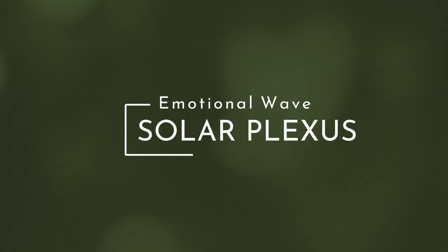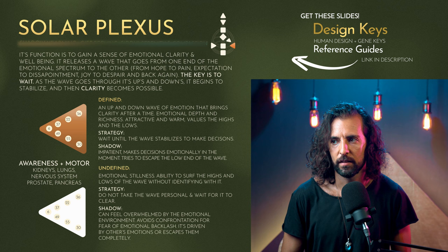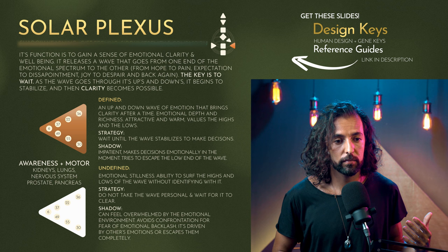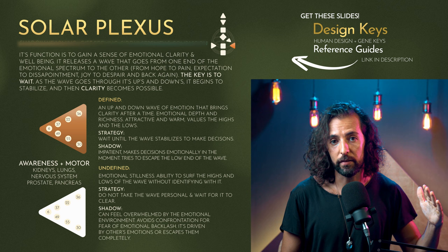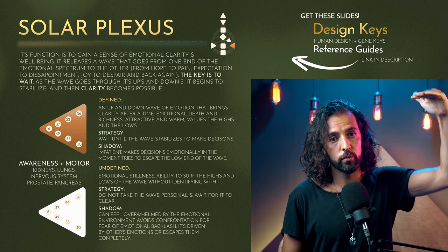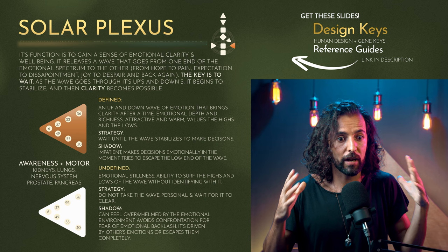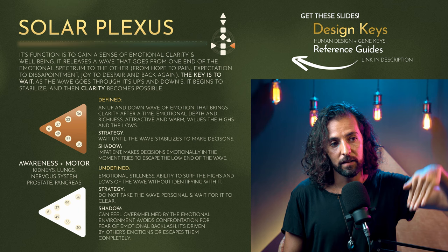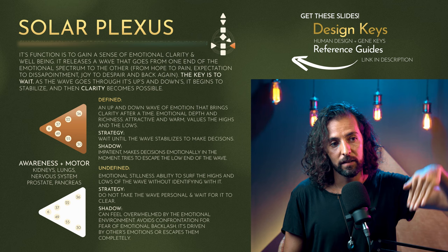The next center is the solar plexus, or the center of emotions. Its function is to gain a sense of emotional clarity. When you have the emotional center defined, you're always going to go through an emotional wave — it goes up and down, from joy to despair, from irritation to elation. When you go through this up and down, at some point you gain clarity when you're not riding the intensity of it — you reach a middle ground.